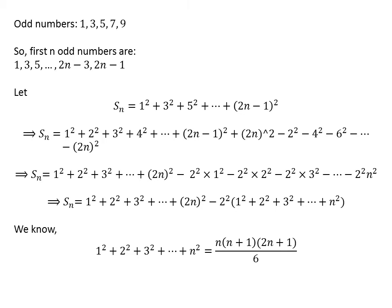We know the sum of squares of first n natural numbers is n times (n plus 1) times (2n plus 1) upon 6. The video explaining the derivation is appearing in the upper right corner, and the link has also been mentioned in the description section.